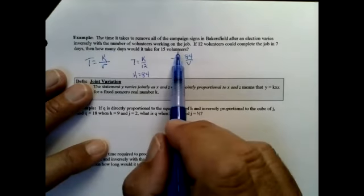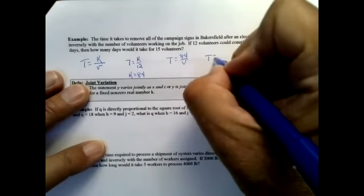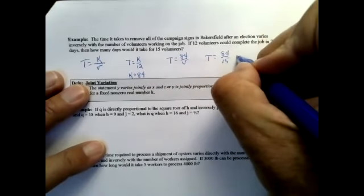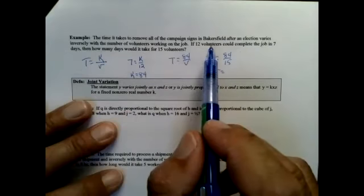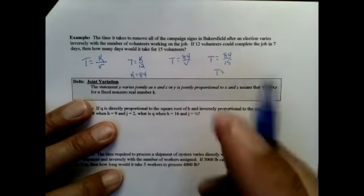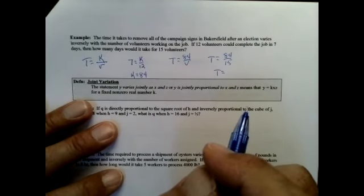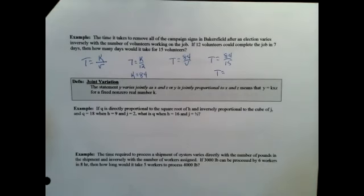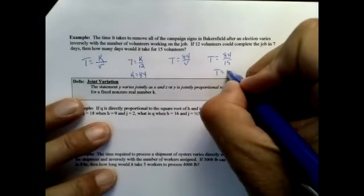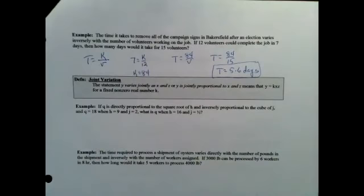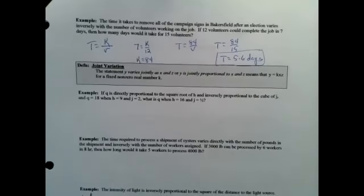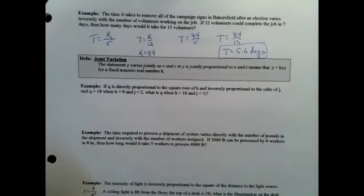So what if I have 15 volunteers instead of 12? Time is going to equal 84 divided by 15. Time equals... So instead of seven days with 12 people, it's going to take me how many days with 15 people? 84 divided by 15. 5.6. 5.6. And if it takes them longer than that, you know they're goofing off. They're taking an extra hour on their lunch break. They're going to the local restaurant for wings.